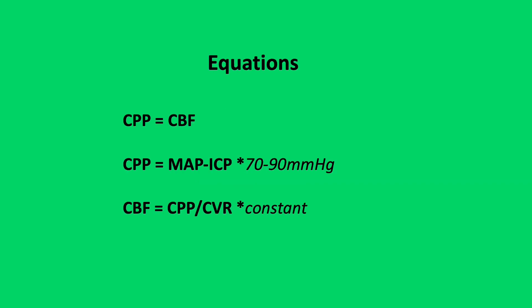Here are three key equations. Cerebral perfusion pressure is often used as a surrogate marker for cerebral blood flow; however, it fails to take into account cerebrovascular resistance. Cerebral perfusion pressure equals MAP minus ICP, and in a normal healthy adult CPP usually ranges between 70 to 90 millimetres of mercury. Cerebral blood flow equals cerebral perfusion pressure over cerebrovascular resistance.